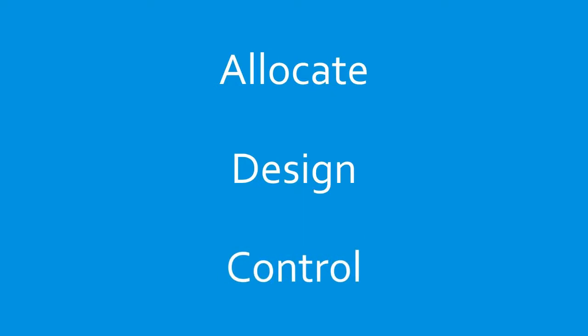This can mean a variety of things, from deciding on the most effective allocation of available resources, to producing a design with the best characteristics, to choosing control variables that will cause the system to behave as desired.